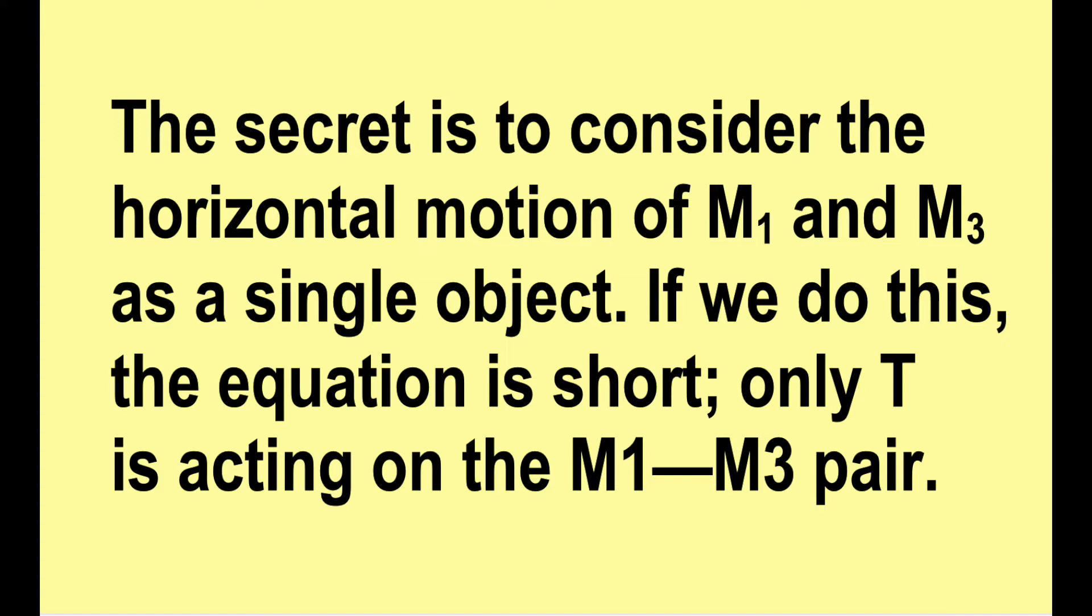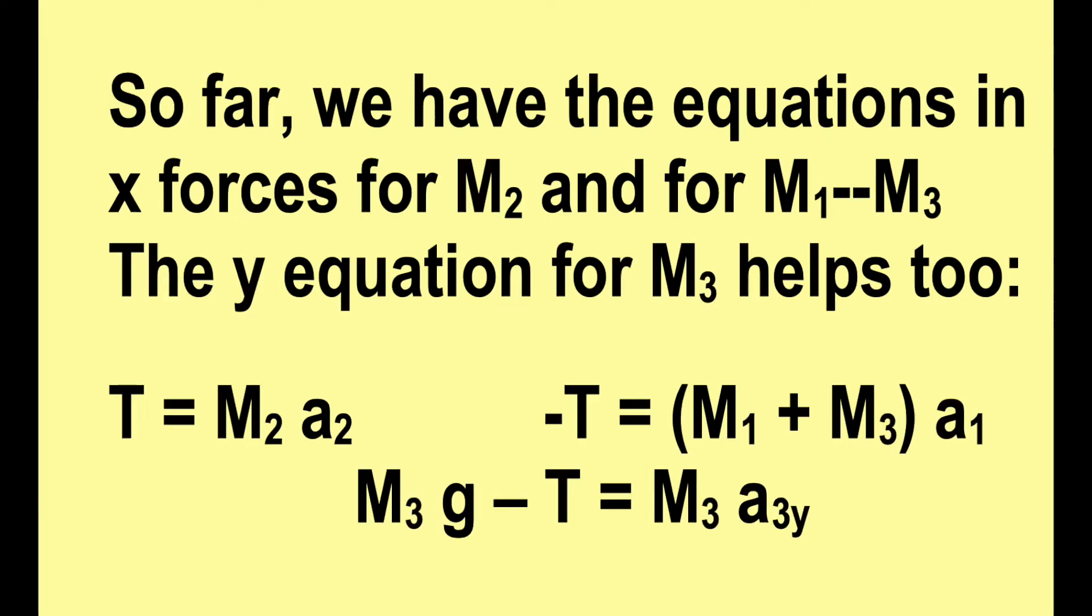If we do this, the equation is short. Only T is acting on the m1, m3 pair, and that horizontally. So now we have the equations in x-forces for m2 and also for the m1, m3 combination. The y equation for m3 is also helpful. So that's three equations, but we have four unknowns. We need another equation.